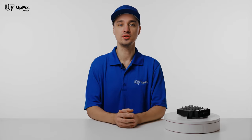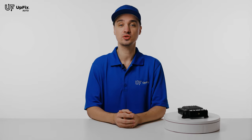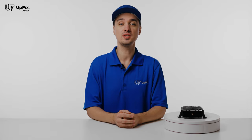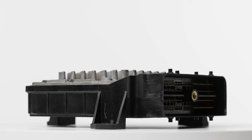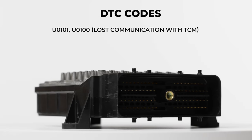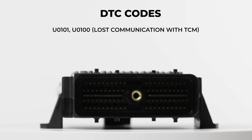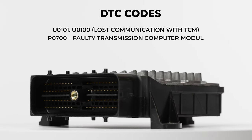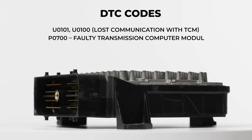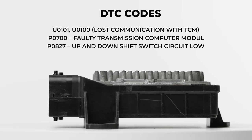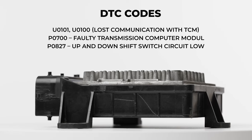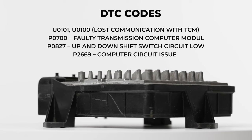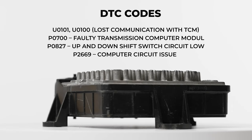The first thing you'd want to do is scan your vehicle for diagnostic trouble codes using an OBD2 scan tool. The most common codes that would point to a faulty TCM include DTC U0101 and U0100, which is lost communication with the TCM; P0700, Faulty Transmission Computer Module; P0827, Up and Down Shift Switch Circuit Low; and P2669, Computer Circuit Issue.